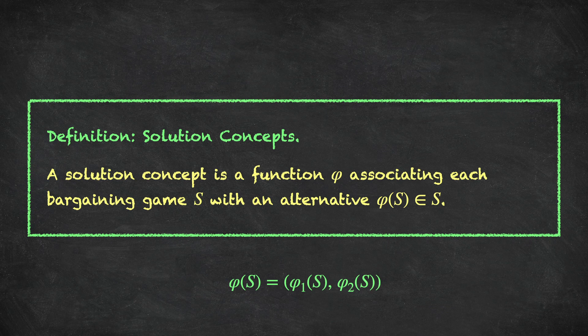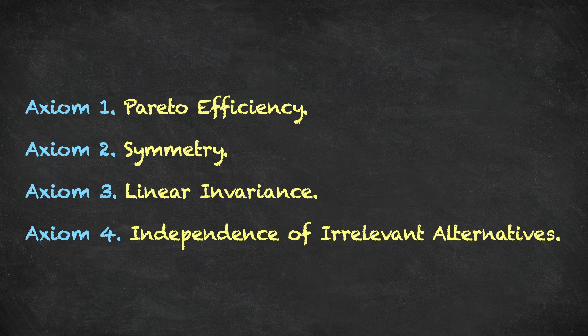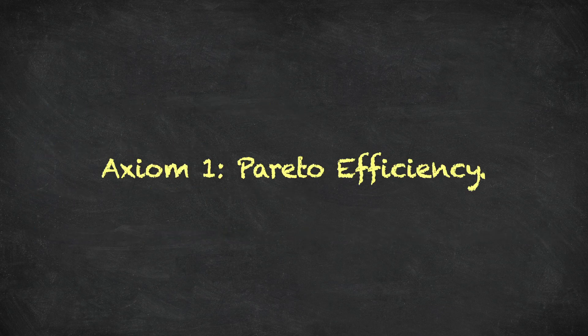Nash proposed four axioms for bargaining solutions. There are many other axioms available in the literature, but we're going to study Nash's axioms as our starting point today. The four axioms we will consider are called Pareto efficiency, symmetry, linear invariance, and independence of irrelevant alternatives. So let's go through these four axioms in turn, explain what they mean, and then state them formally as properties of our solution concept.